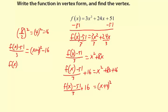So f of x minus 51 equals 3 times x plus 4 quantity squared. And then we're going to need to do 3 times negative 16. It's negative 48. So we're going to have a minus 48 here.